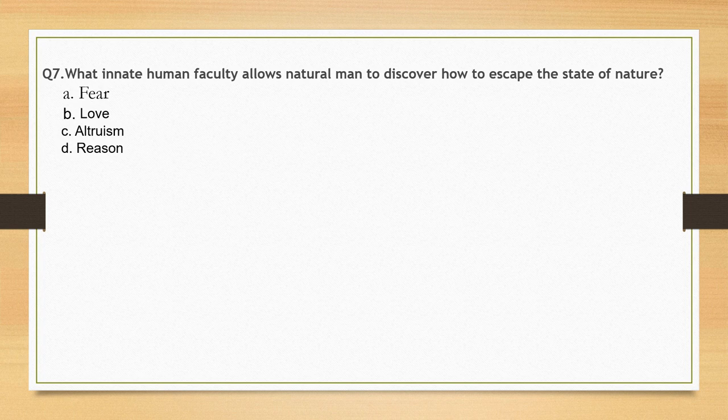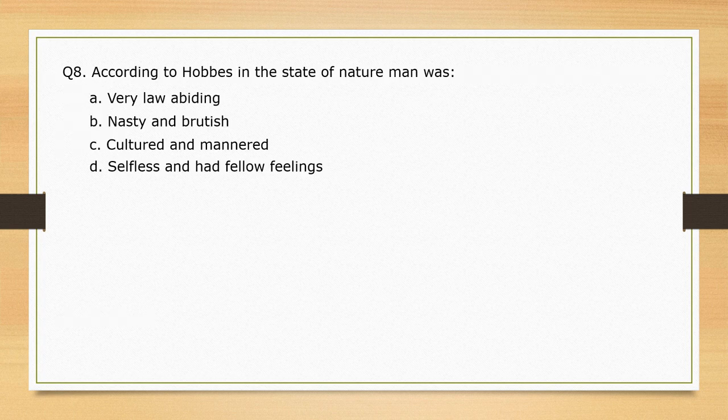What innate human faculty allows natural man to discover how to escape the state of nature? The correct option is option D: reason. According to Hobbes, in the state of nature man was — options: very law abiding; nasty and brutish; cultured and mannered; selfless. The correct option is option B: nasty and brutish.